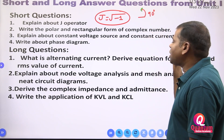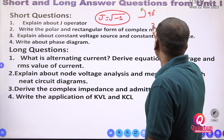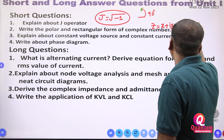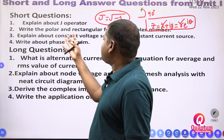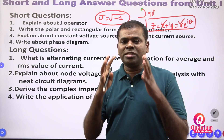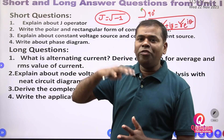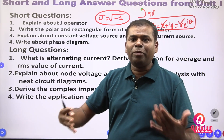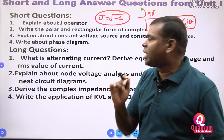Write the polar and rectangular forms of a complex number. Suppose z in polar form is r·e^(jθ) and in rectangular form it is written accordingly. Explain about the constant voltage source and constant current source — in a constant voltage source how the resistor behaves, and in a constant current source how the resistance behaves, and how to convert between them. Also explain about the phasor diagram and how to represent it.